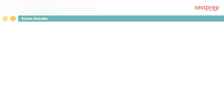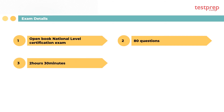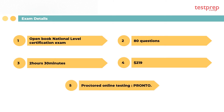Exam details: This is an open book, national level certification exam with the code year 2018. There will be 80 questions with a time duration of 2 hours and 30 minutes. The Accessibility Inspector or Plans Examiner exam comes under the code enforcement category and will cost $219. Candidates can take the exam using proctored online testing, that is, Pronto.